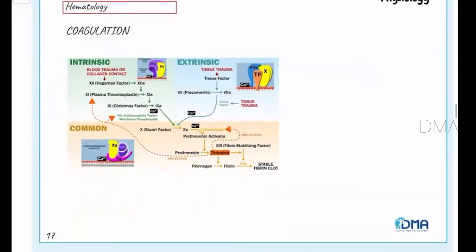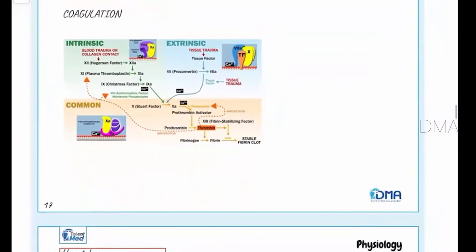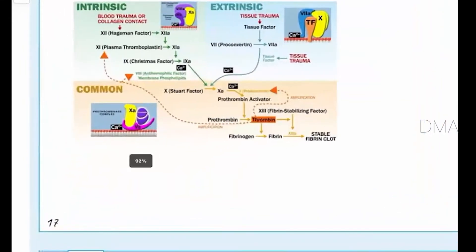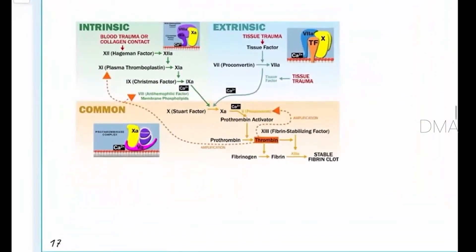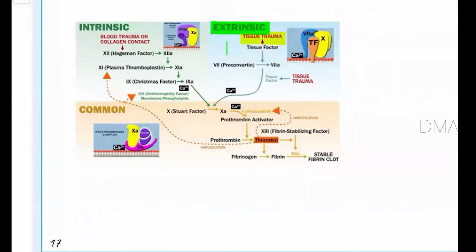Now, what is the role of these clotting factors in the mechanism of secondary hemostasis? Secondary hemostasis is of two types: the extrinsic pathway and the intrinsic pathway of coagulation.